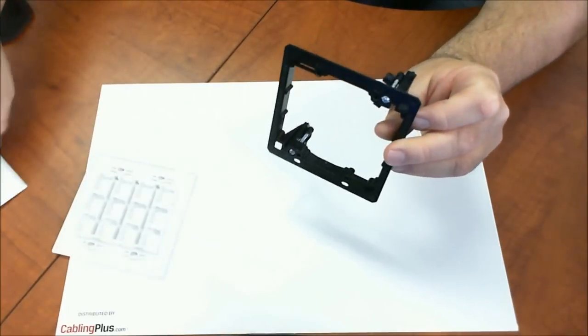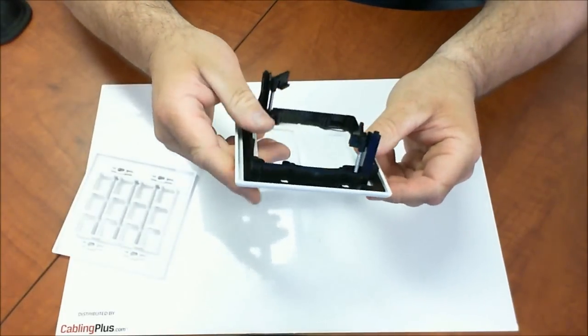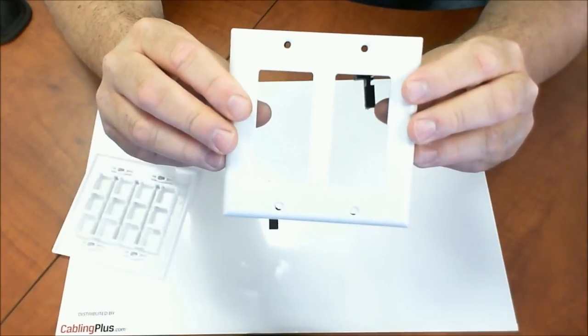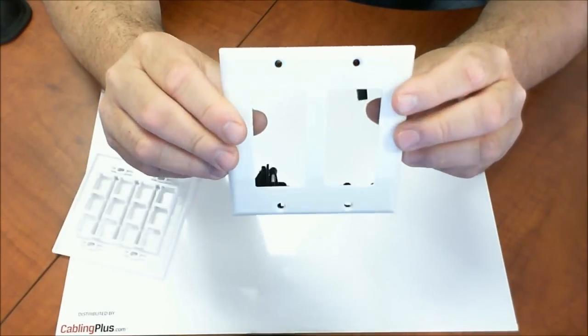And then this would be a Decora style. So let me just show you what that looks like. This would be a Decora style. So again, you see the holes are matching, and now you have that base to support your installation.